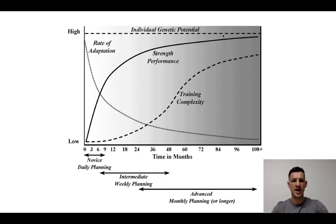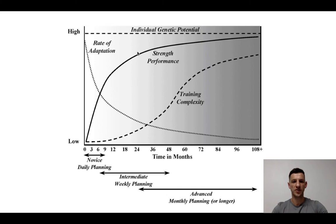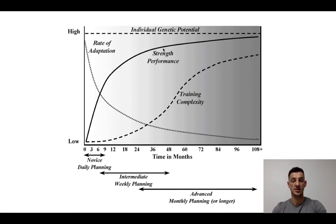This image illustrates what I was saying. On the vertical axis we have the rate of adaptation, and on the horizontal axis we have time in months. We see rapid growth in the first year, and then we start to slow down after about two years. This graph is very representative of strength as an adaptation.